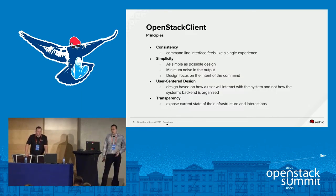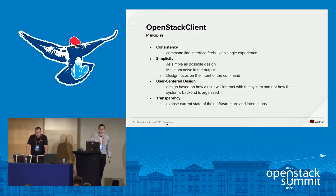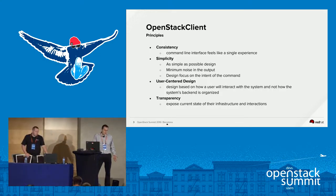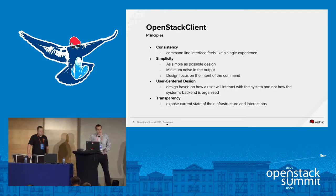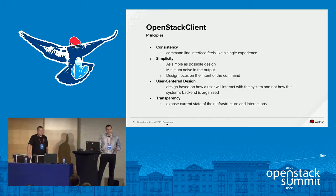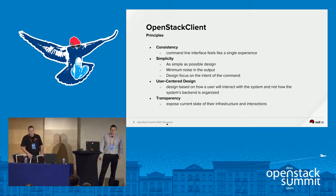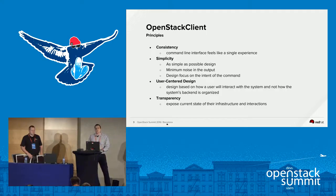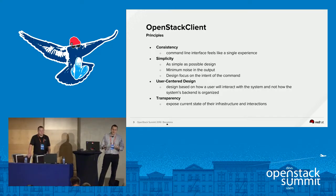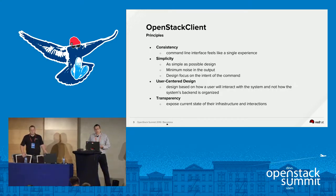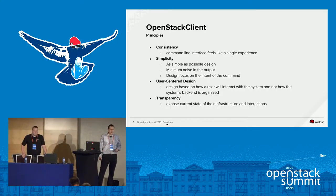Here are a few principles — what you can expect from the new OpenStack Client. First: consistency. If you think about the legacy CLI, it was not always consistent. For instance, if you wanted to list instances you'd say Nova list, but to list images in Glance you'd type glance image-list. From a command perspective, it wasn't consistent. For newcomers especially, that's not a good approach. OpenStack Client simplifies that and makes it more consistent. Simplicity is the second biggest principle.